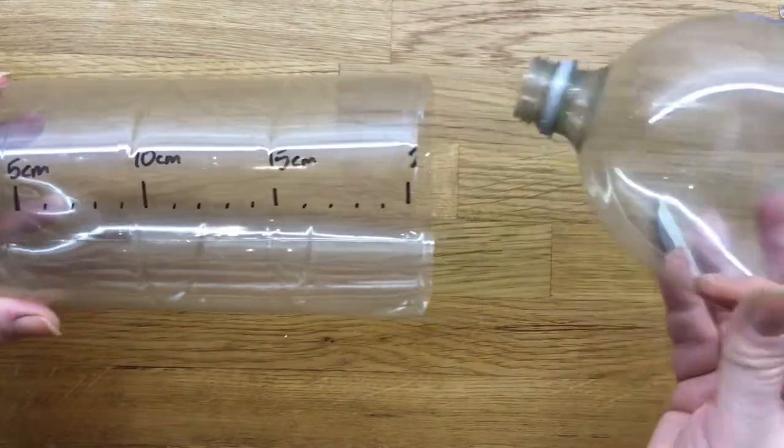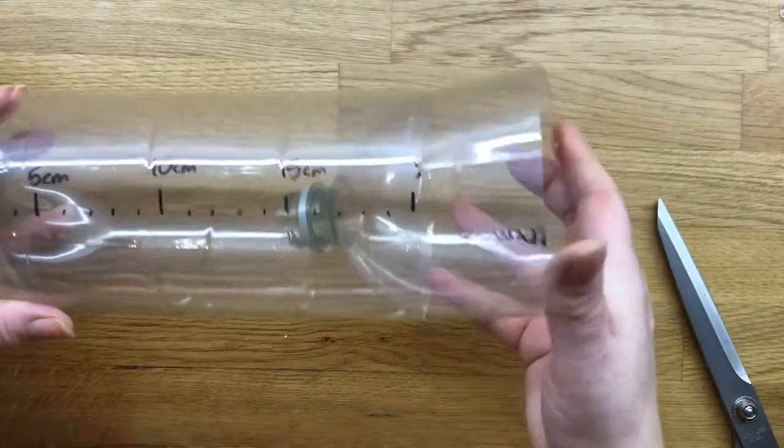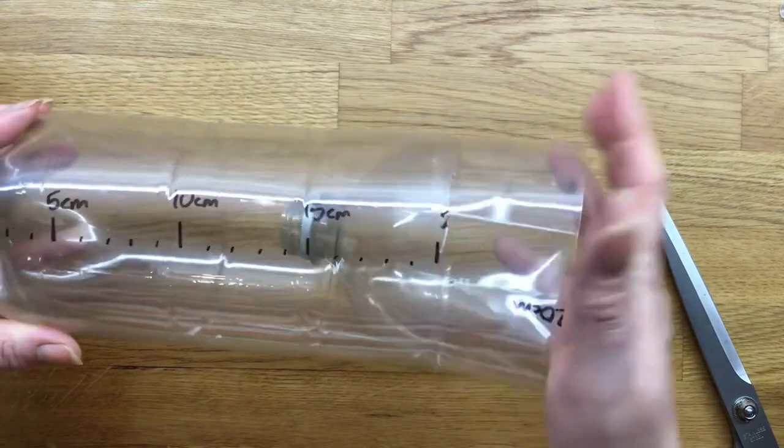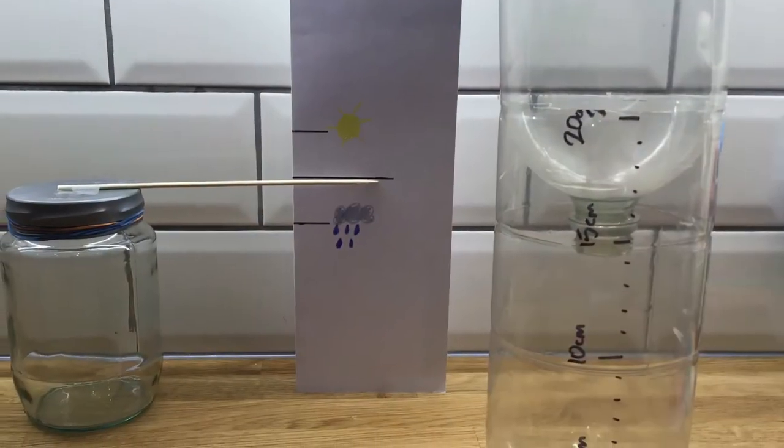Once you've cut the neck off the bottle you can turn it upside down and pop it back inside the end. This becomes a funnel that catches the rain.